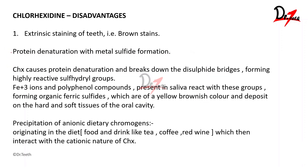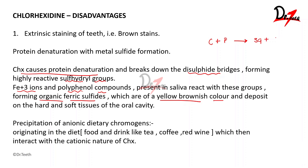The third mechanism of staining is that chlorhexidine causes denaturing of proteins with metal sulfide formation. Chlorhexidine denatures proteins and breaks down disulfide bridges, forming highly reactive sulfhydryl groups. These sulfhydryl groups then react with ferric ions and polyphenol compounds present in saliva, producing organic ferric sulfides. These ferric sulfides deposit on hard and soft tissue, imparting a yellowish-brown color.